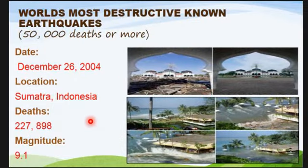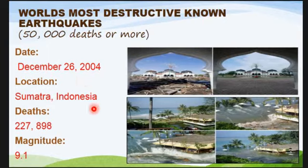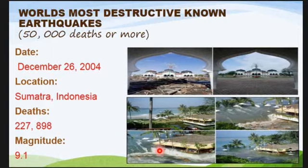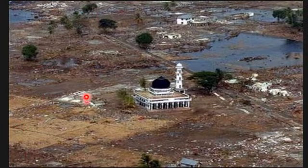Here are some of the most destructive known earthquakes in the world. On December 26, 2004, an earthquake of magnitude 9.1 occurred in Indonesia, resulting in 227,898 deaths. Because the focus was underwater, it generated a massive tsunami. The area was completely devastated.